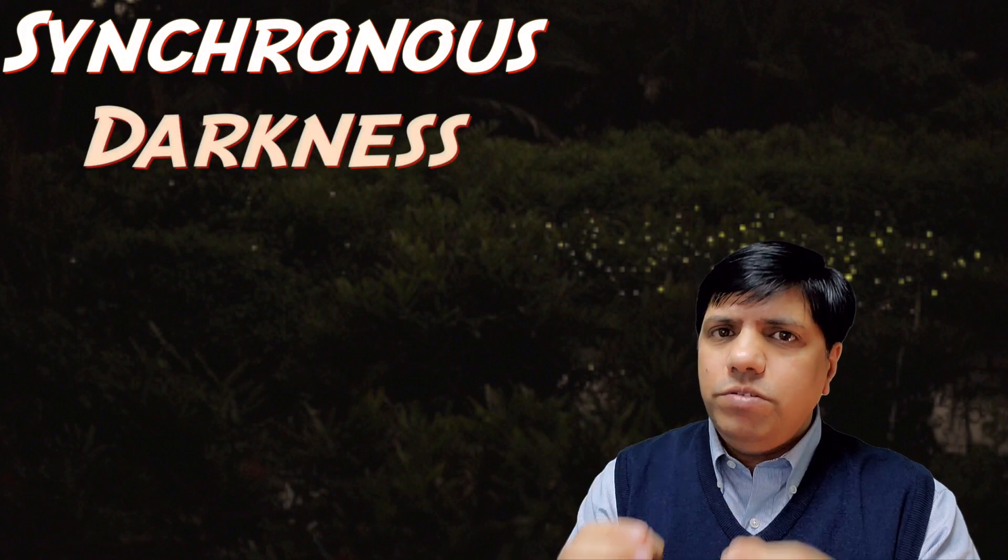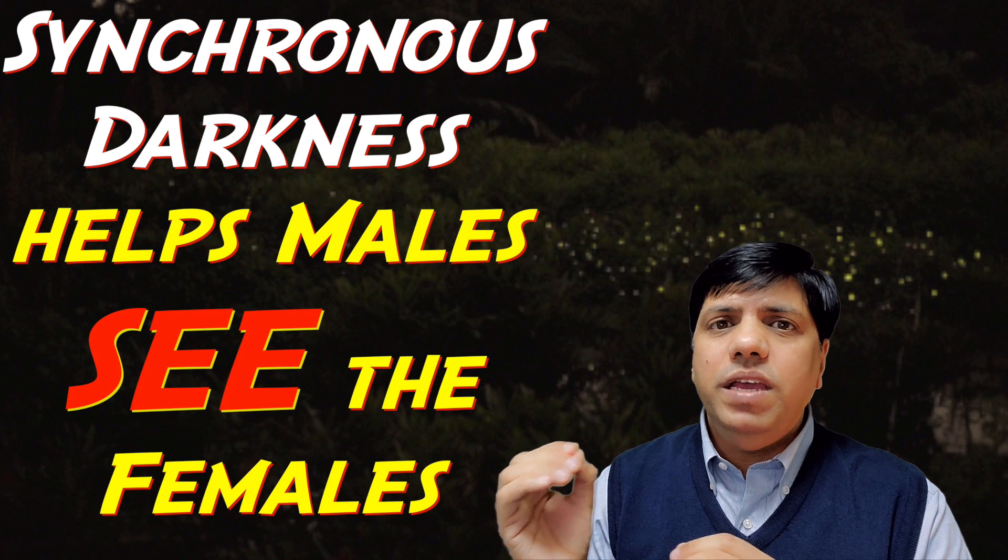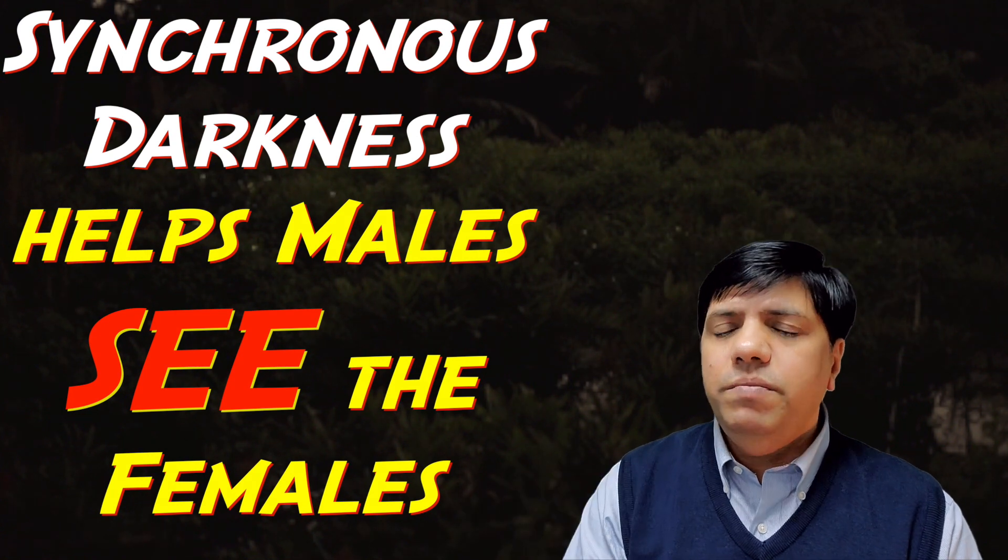So as important as flashing is the non-flashing time as well. So when they achieve spontaneous synchronization, they glow together, they flash light together, but more importantly they also switch their lights off together, they also pause together. And that pausing together creates a complete darkness where it's very easy for male fireflies to identify females on the ground. So that's the second evolutionary explanation as to why these fireflies actually go for spontaneous synchronization.